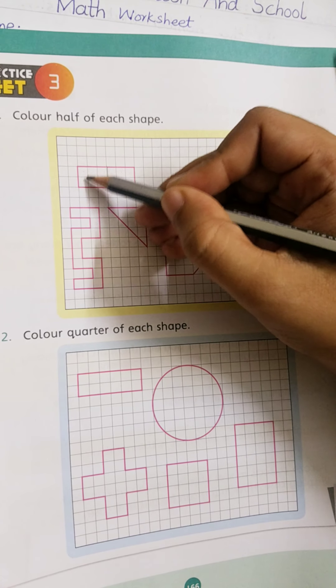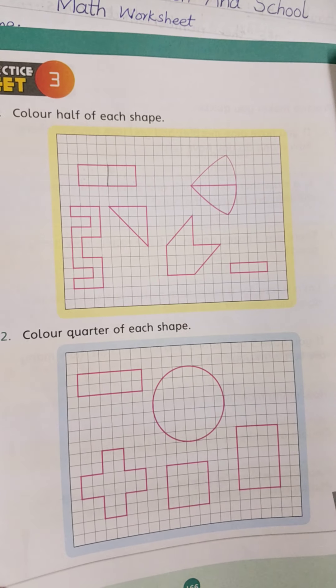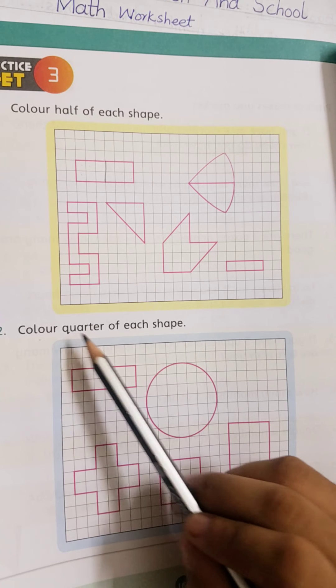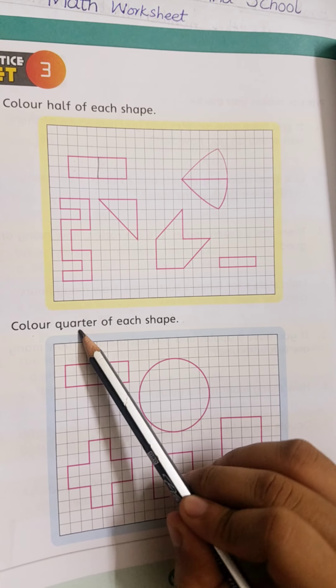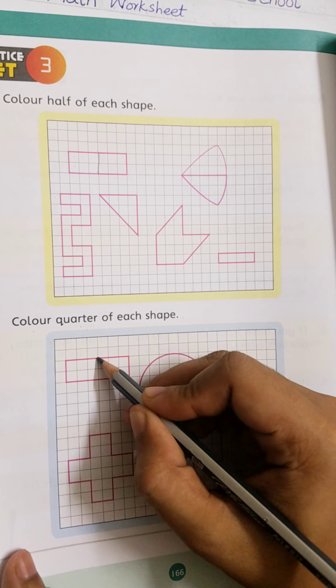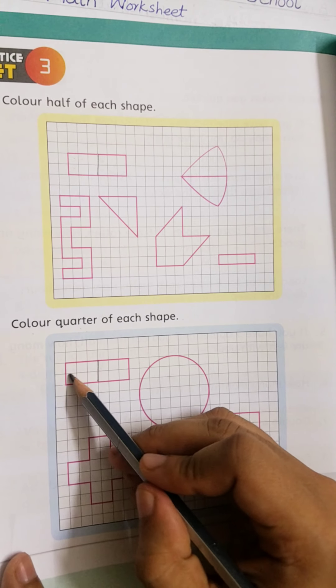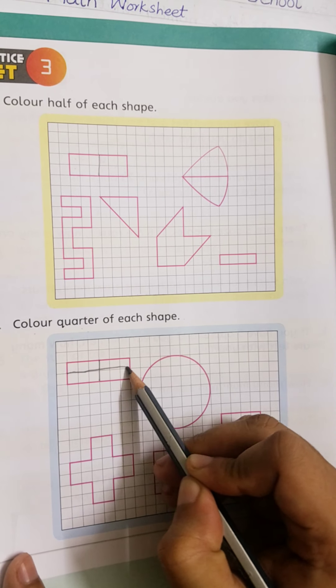And half in different color. Color quarter of each shape. Quarter means 1 by 4. Divide each shape 1 by 4, then color each part.